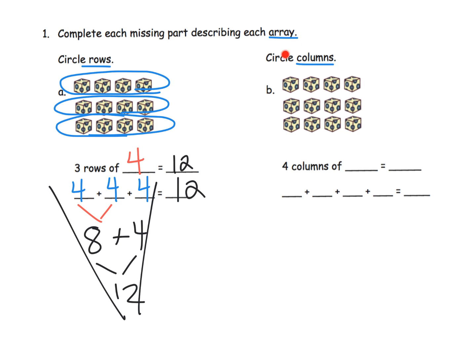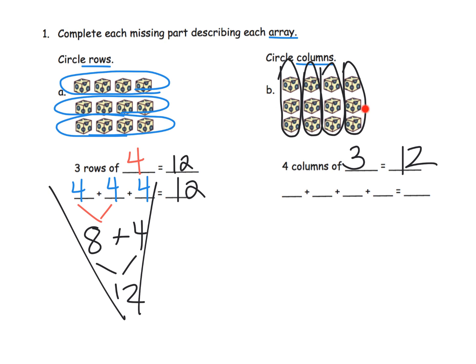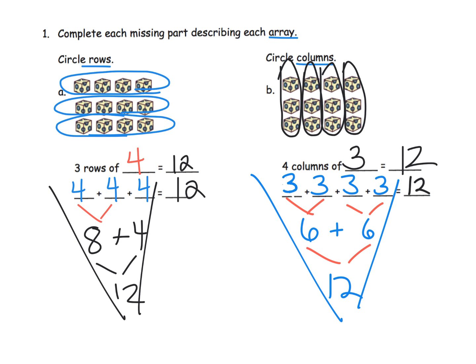Similarly, if we wanted to circle the columns, we would say: here's a column, here's a column, here's a column, here's a column. So we have four columns of three. Because we're talking about the same array — this array and this array were identical, we just changed how we counted — we know that there are 12 already. The repeated addition is going to be 3 plus 3 plus 3 plus 3, which is 12. Because 3 plus 3 is 6, another 3 plus 3 equals 6, and then 6 plus 6 is equal to 12.